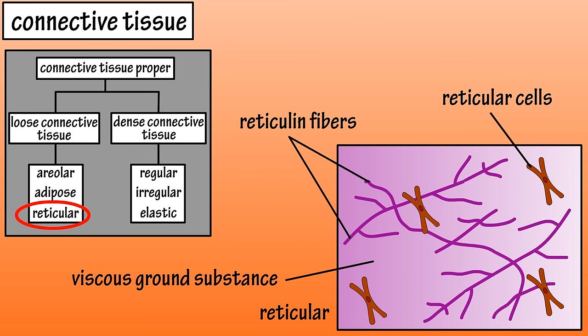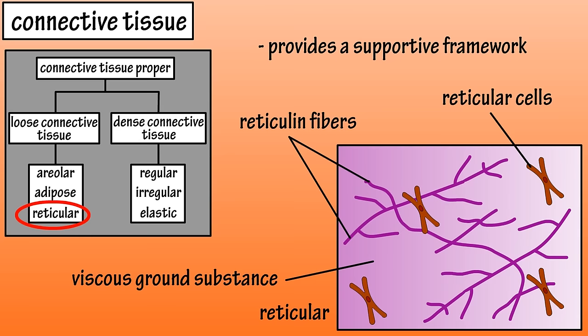Reticular connective tissue has a viscous ground substance with a branching network of reticulin fibers within it. Reticular cells and the fibers provide a supportive framework in the spleen, lymph nodes, and bone marrow.